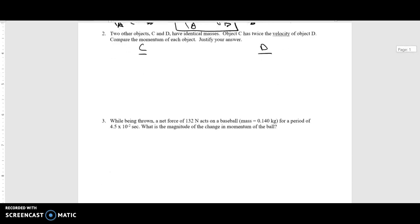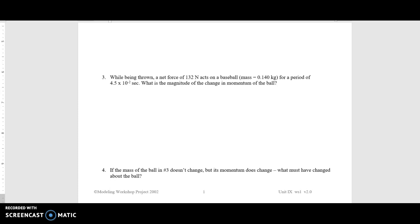Okay, great. I'm glad you paused it. I'm glad you solved that problem. Let's take a look at number three, and then I'm going to set you free. Okay. While being thrown, a net force of 132 newtons acts on a baseball, which has a mass of 0.140 kilograms, for a period of time, T equals 4.5 times 10 to the negative 2 seconds.